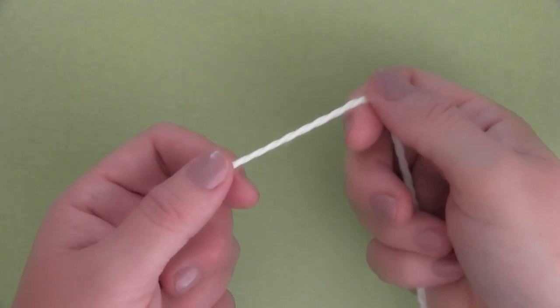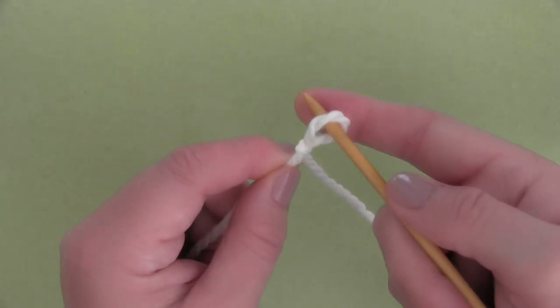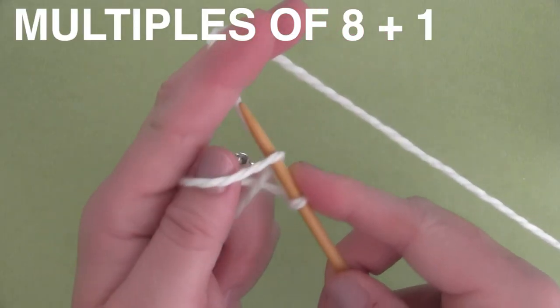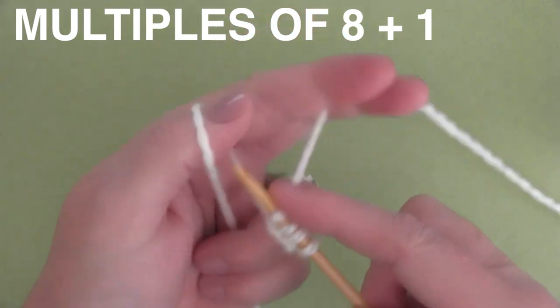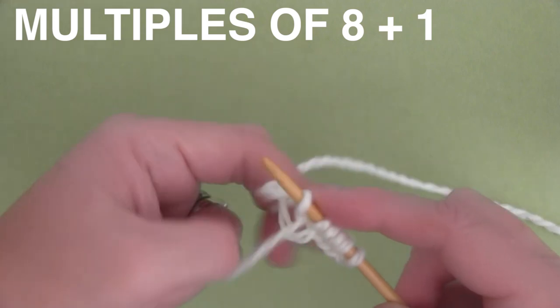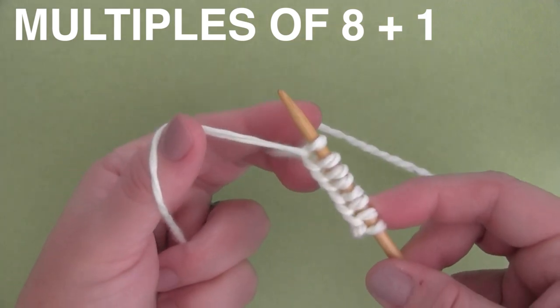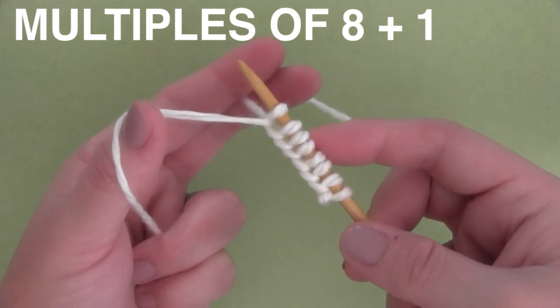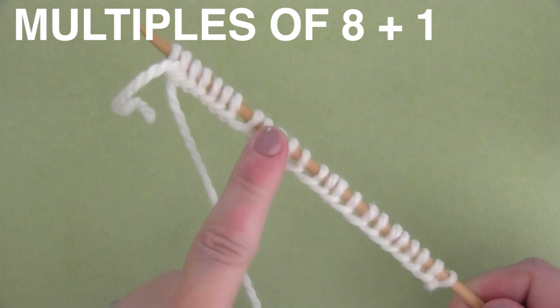We begin with our beloved Slipknot. For this pattern, we are going to be casting on our stitches in multiples of 8 plus 1. So we begin by casting on 8 stitches. And then you will continue casting on in multiples of 8 until you have the number of stitches that you would like on your needle. It is totally your choice.